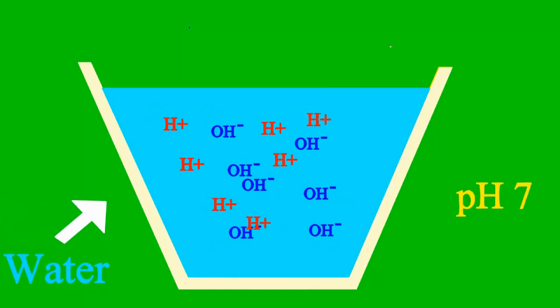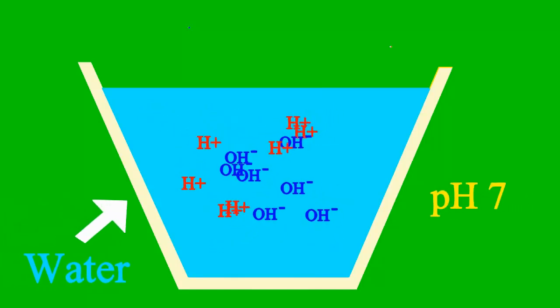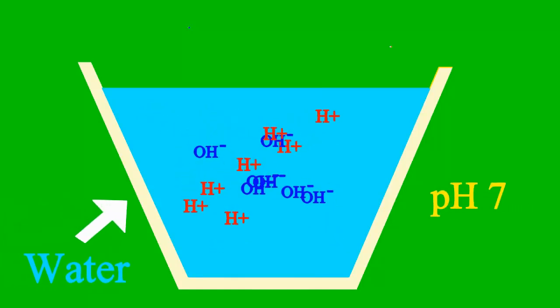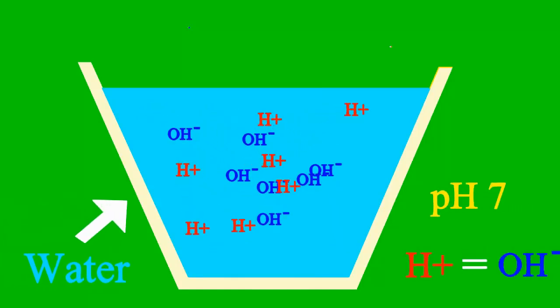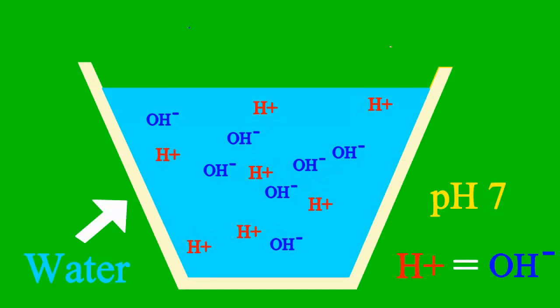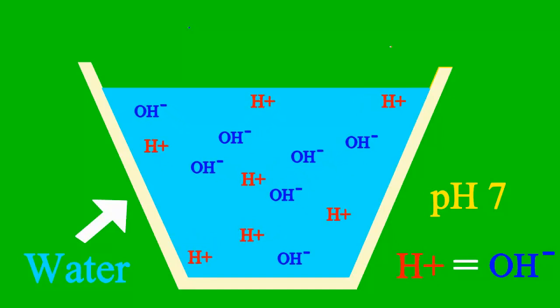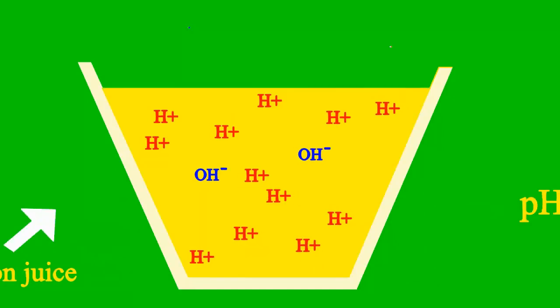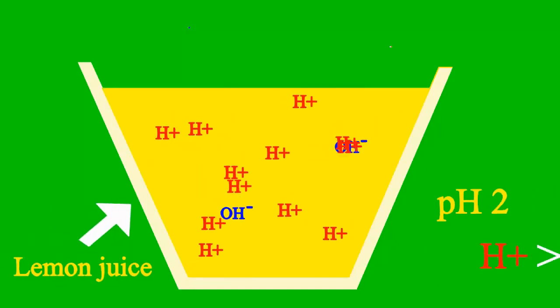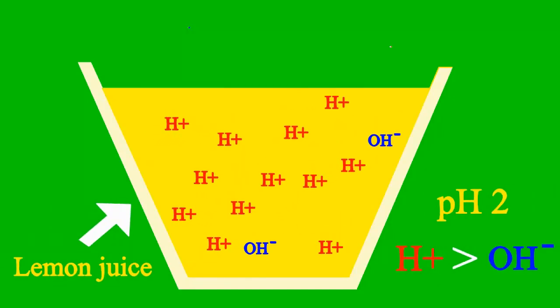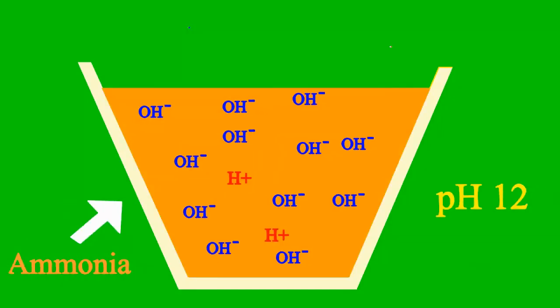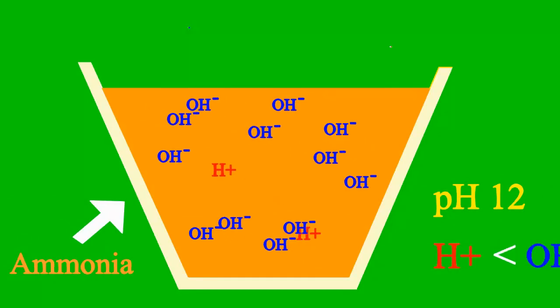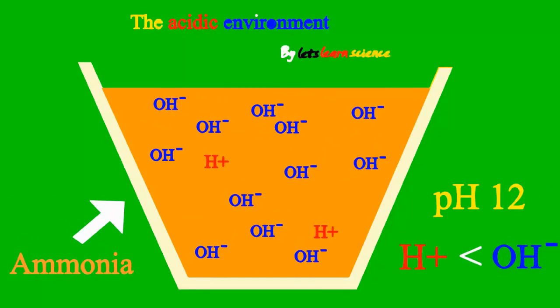When the pH is 7, then it's a case where the sample is neither an acid nor a base. But less than 7, it's an acid. More than 7, it's a base all the way.